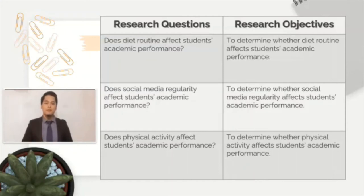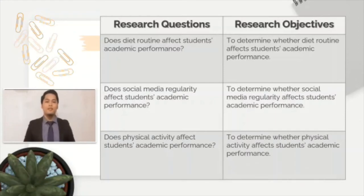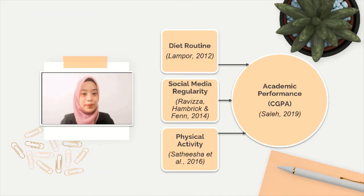The third research question is: does physical activity affect students' academic performance? It is reflected to the research objective, which is to determine whether physical activity affects students' academic performance.